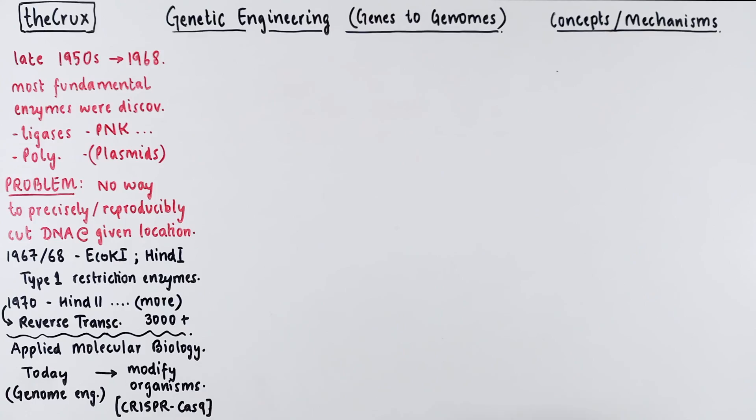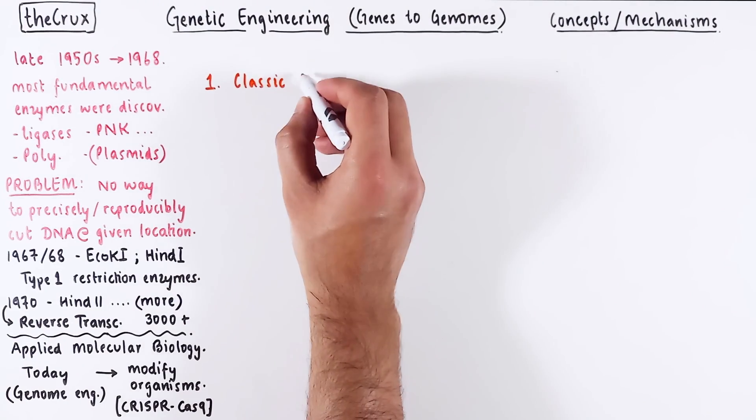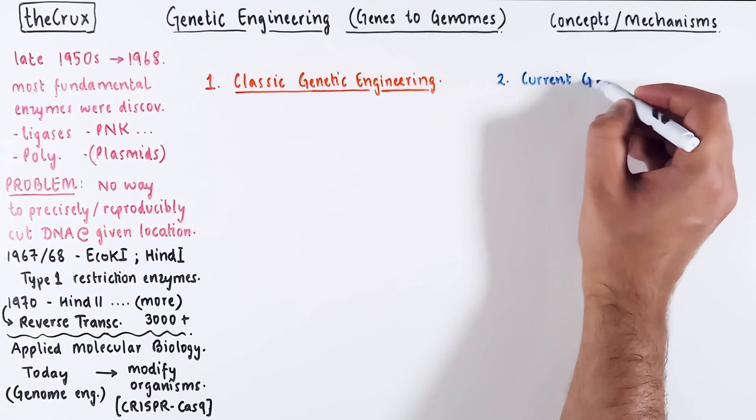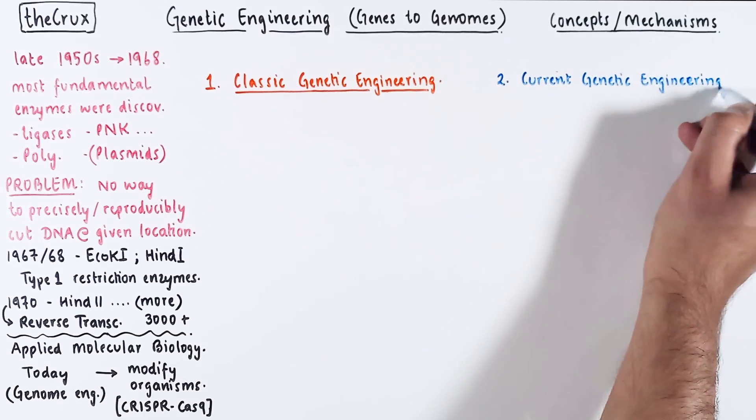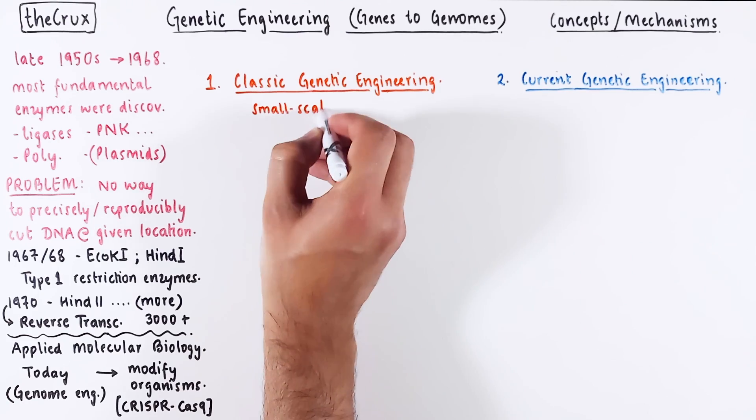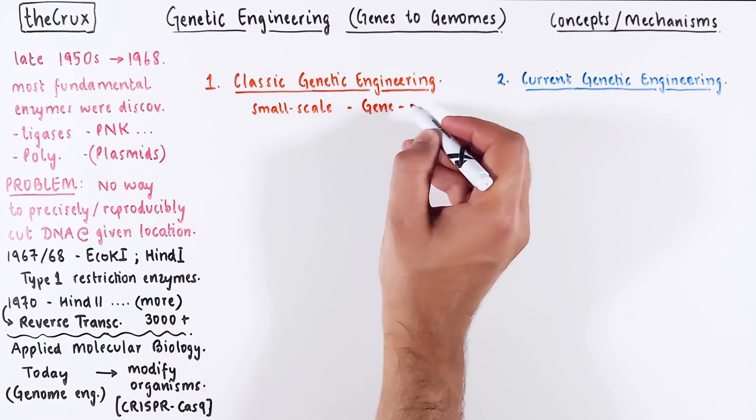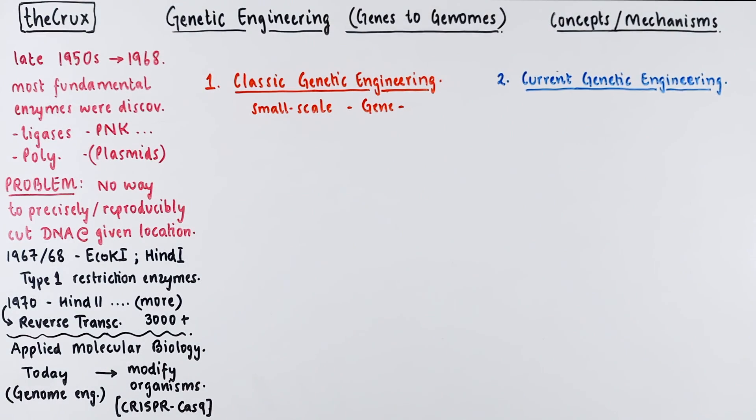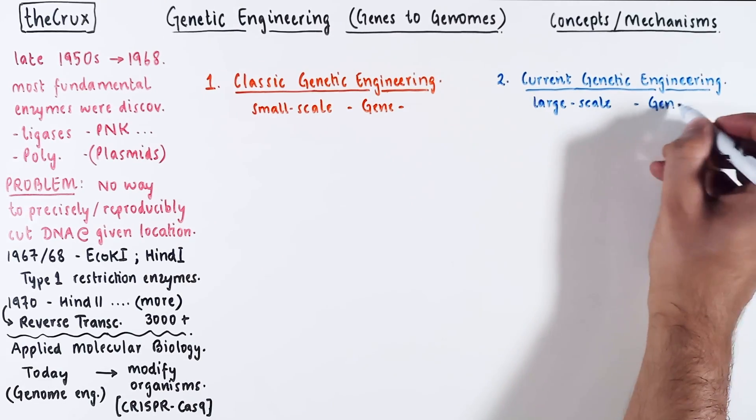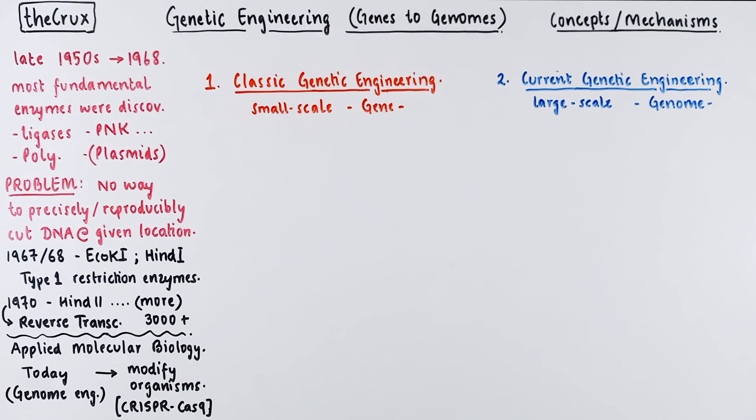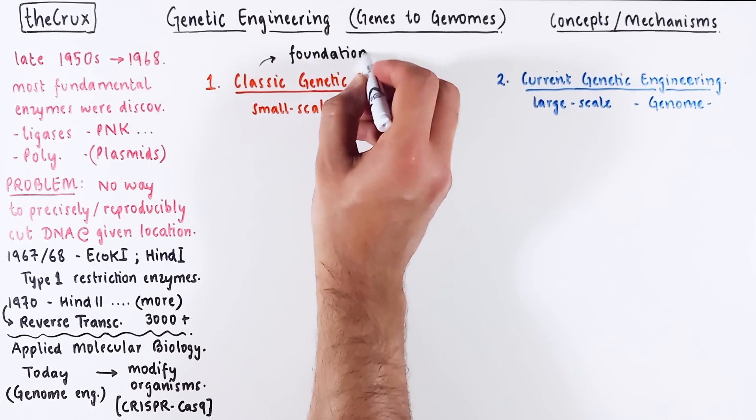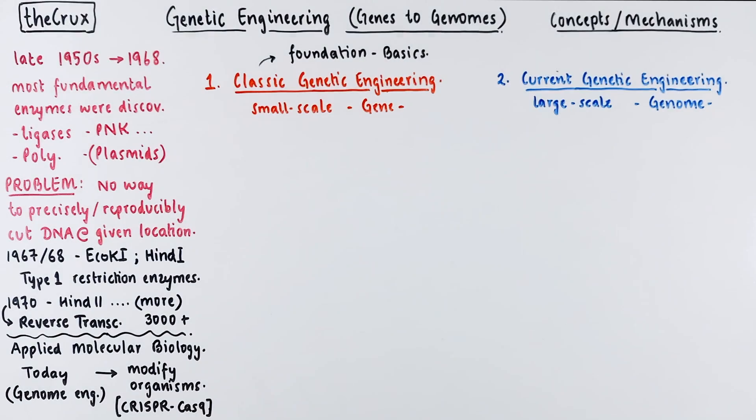Let's break down genetic engineering into two distinct eras for the sake of simplicity: classic genetic engineering and contemporary or modern genetic engineering. Classic genetic engineering operates on a smaller scale, primarily involving gene-level manipulations conducted outside of the cell. On the other hand, modern methods empower you to modify DNA at a genome level within a cell. It is important to recognize that modern genetic engineering builds upon the foundation principles of classic genetic engineering.